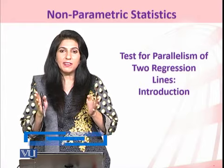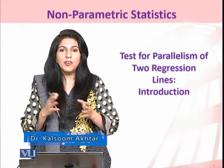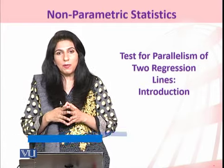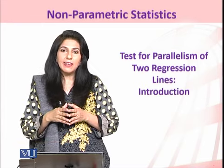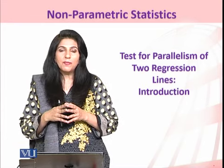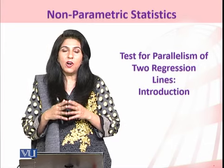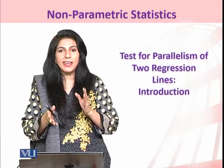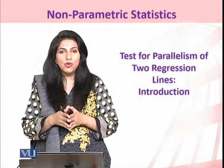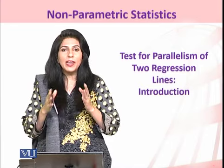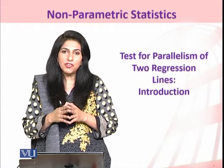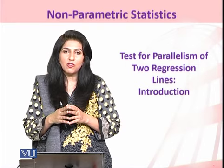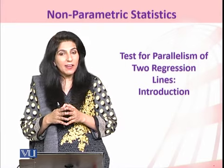If we consider that the two populations are normal, meaning the data of the two samples is drawn from normal populations, then in case the populations are non-normal we can make use of non-parametric alternative approaches. In this particular case, where the test is to compare two parallel regression lines, Hollander has proposed a procedure to test whether the two regression coefficients or slopes of the two lines are identical to each other.